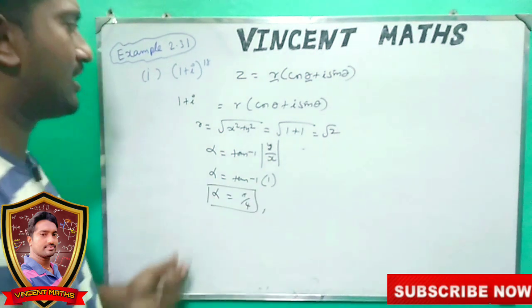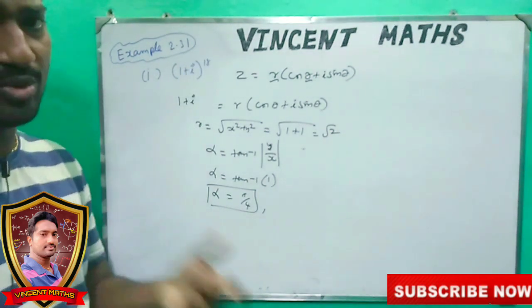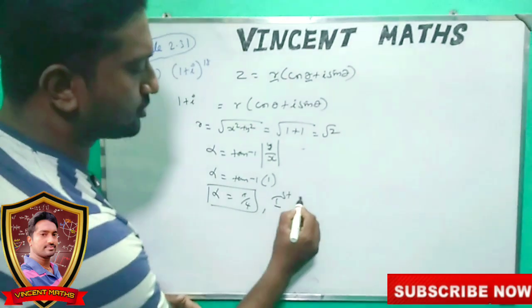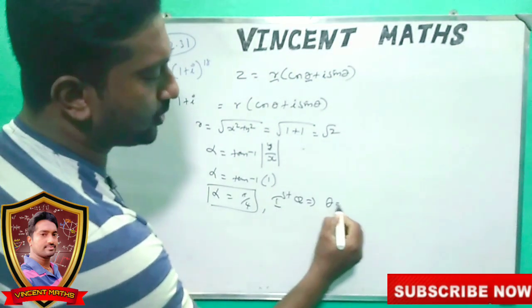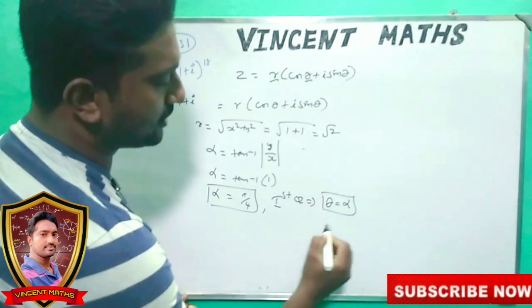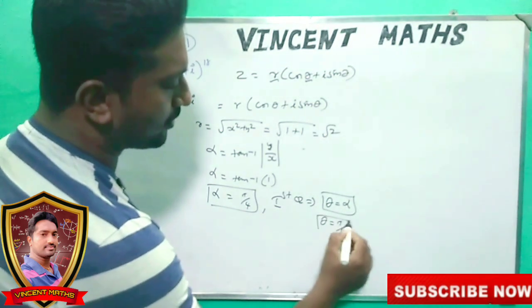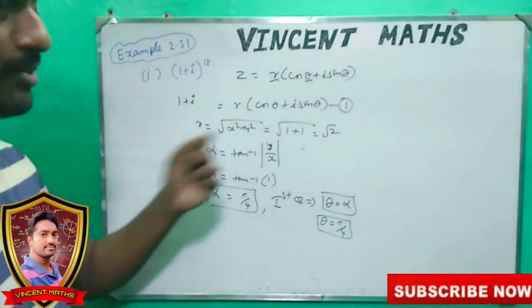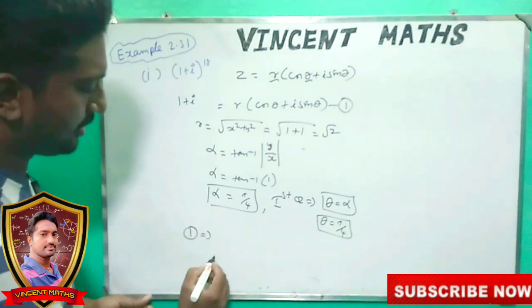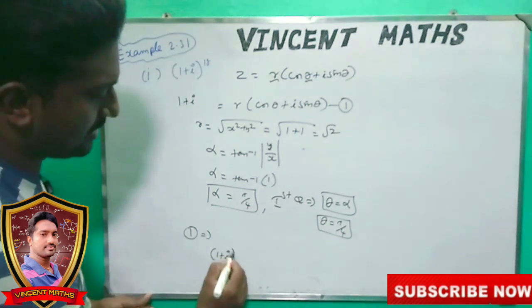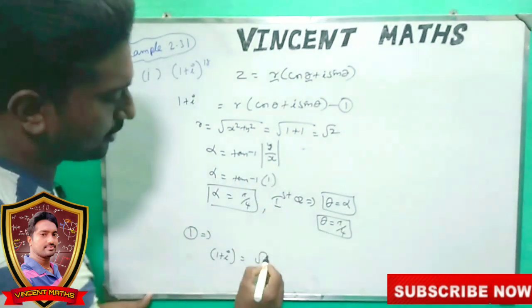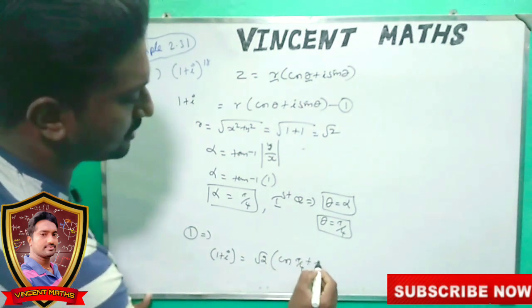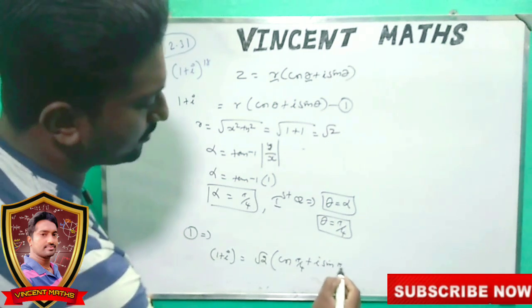Okay friends, if we go to (1,1), what is the first coordinate? The first coordinate is in the first quadrant. So 1 plus i equals root 2, and we substitute: 1 plus i equals R value, which is root 2, times cosθ plus i sinθ, where theta is cos pi by 4 plus i sin pi by 4.